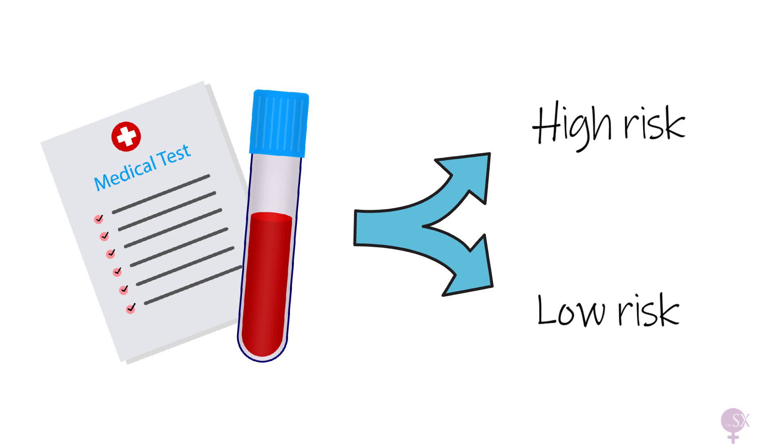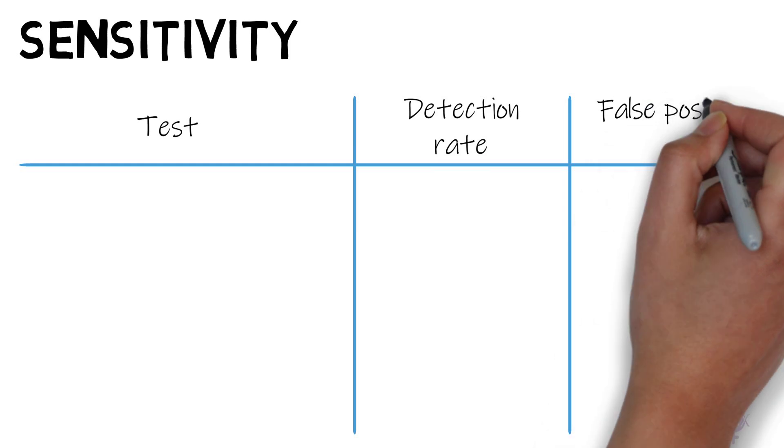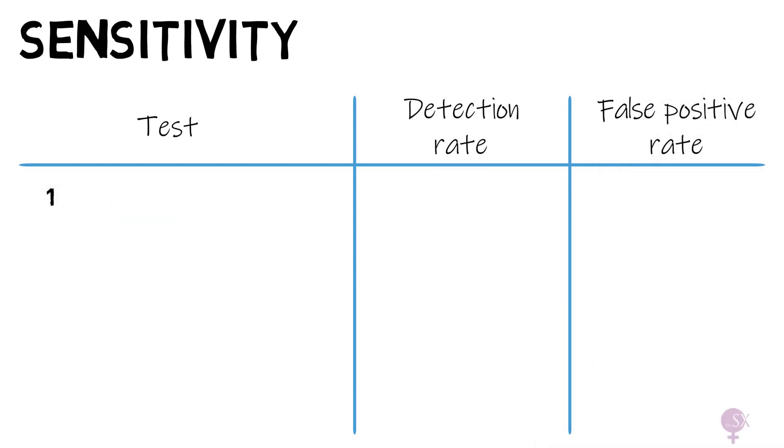Now let's compare these screening tests. In this table, we'll look at their detection rates and false positive rates. Starting with the first trimester combined test, this has a detection rate of 90% and a false positive rate of 5%.